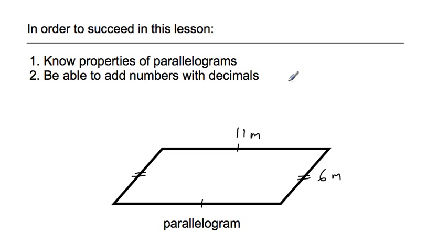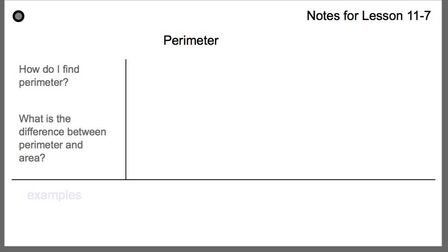The second thing you'll have to be able to do today is add numbers with decimals. That's going to take you back a ways. Here's our notes: How do I find perimeter? The whole lesson is about that, so you'll be finding perimeter for a bunch of problems.